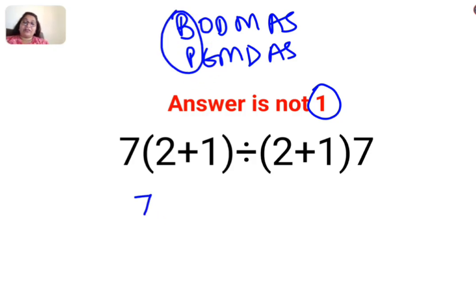So we will keep the rest of the question as it is. 2 plus 1 is 3, also 3 and 7. The sign between this bracket and the 7 is nothing—it is not given, which means it is multiplication.